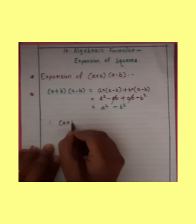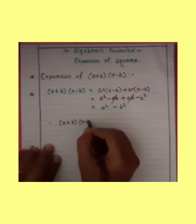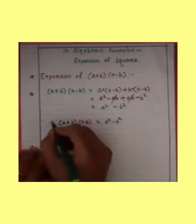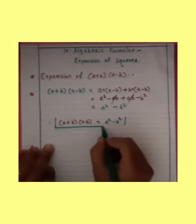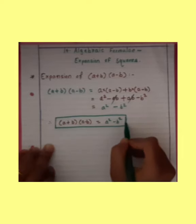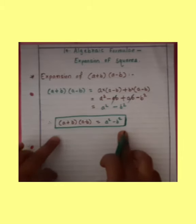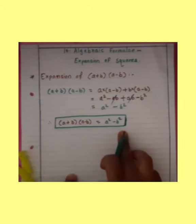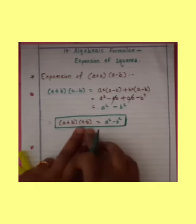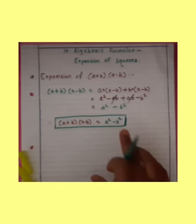A plus B into another bracket A minus B is equal to A square minus B square. Use this identity and practice set 51 to solve. Do you understand, student, how to solve this expansion? A plus B into another bracket A minus B is equal to A square minus B square.